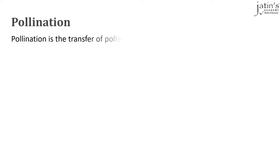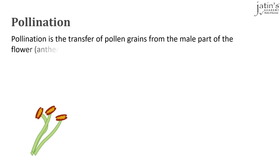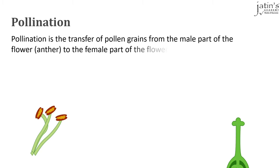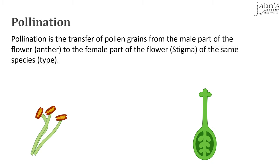Pollination is the transfer of pollen grains from the male part of a flower, the anther, to the female part of the flower, the stigma, of the same species. For example, a pollen grain on the anther is carried away from the anther all the way to the stigma of the flower. Once it reaches the stigma, we say that pollination has occurred.